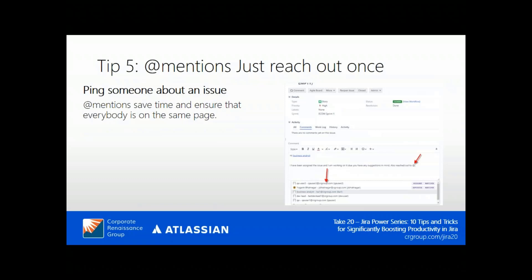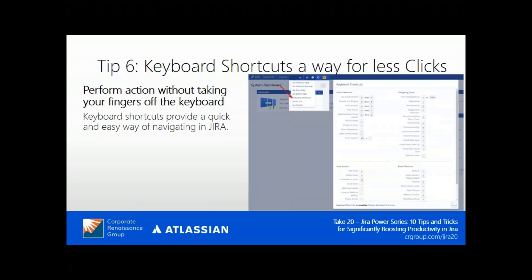Tip five: at mentions. If you need to ping someone or grab the attention of a person, you can just type the at symbol and start typing the username or name. You can then address that particular person, write your comment, and an email will go to them notifying them that their attention is needed on that issue.